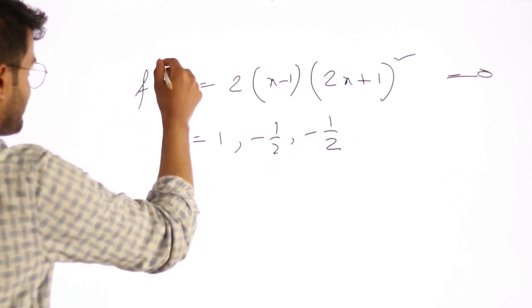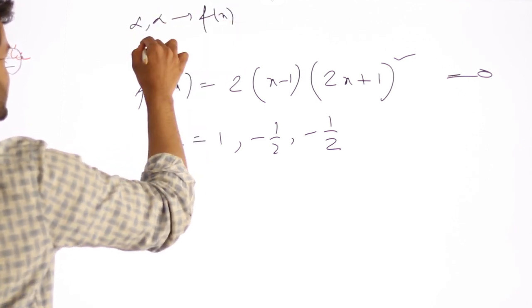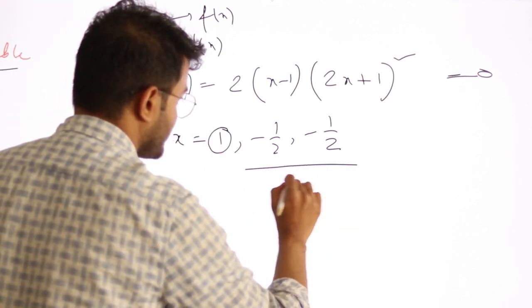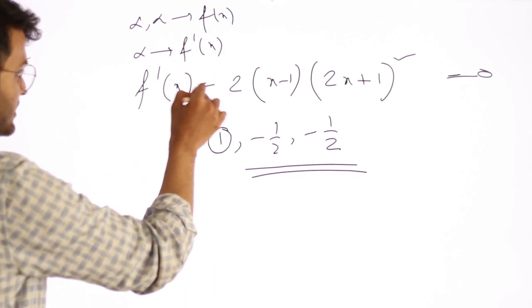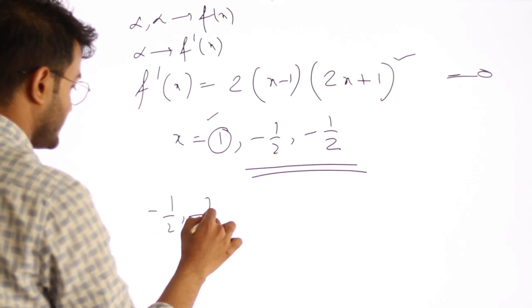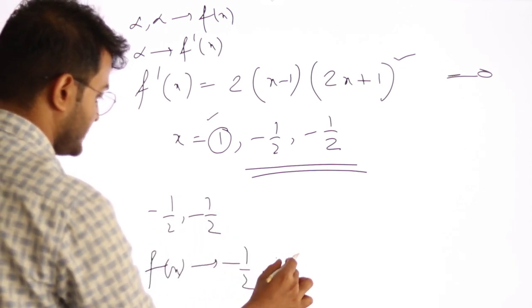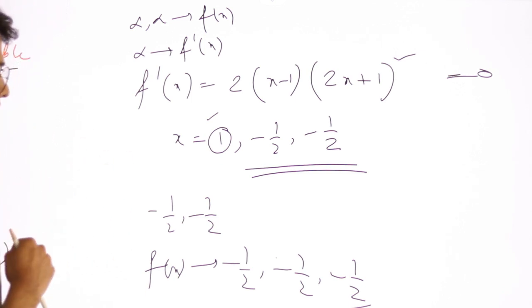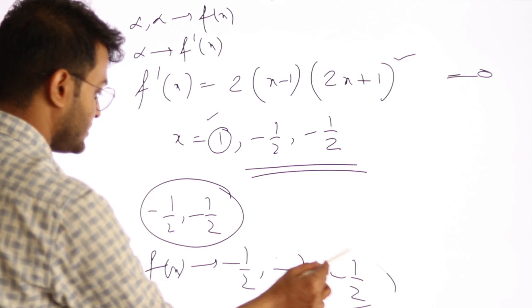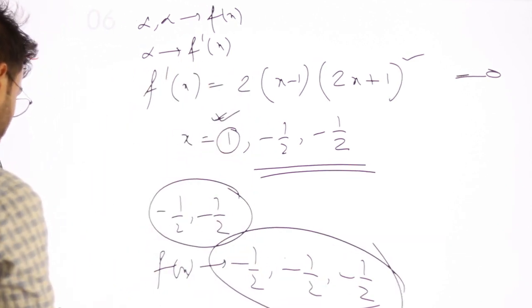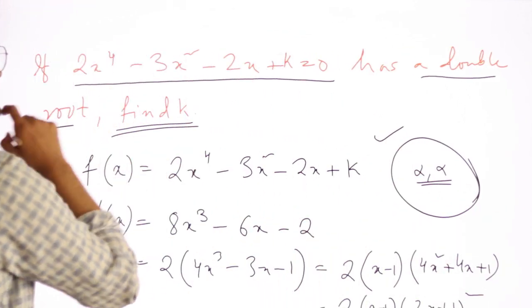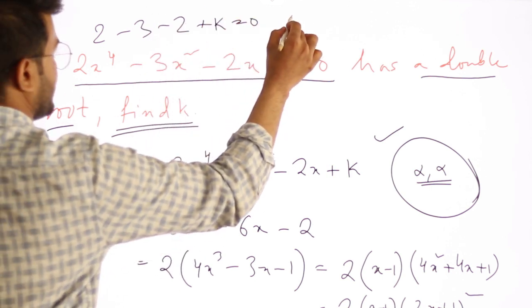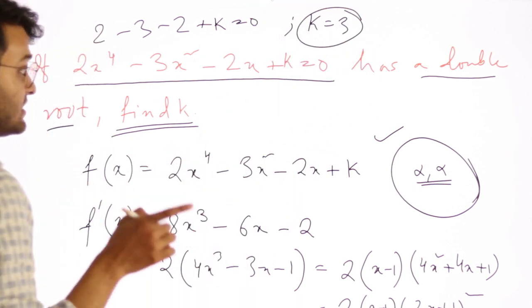Now look. The repeated root will be in f'(x). If alpha is the root of f'(x), then alpha is the root of f(x). So here we will take 1. Why not minus half? Look, I told you the logic. Anyone can say it is minus half minus half. So maybe f(x) will be minus half, minus half, minus half three times. But double root means it occurs twice. If this is the root of f'(x), then it will occur three times. So x equals 1.